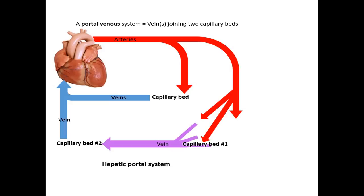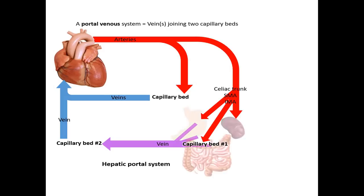In the hepatic portal system, the arteries are the celiac trunk, the superior mesenteric artery, and the inferior mesenteric artery. These supply the first capillary bed which can be found in the stomach, spleen, and intestines. These drain eventually to the hepatic portal vein, which feeds the second capillary bed found in the liver. Finally, the hepatic veins return the blood to the inferior vena cava and subsequently the heart.